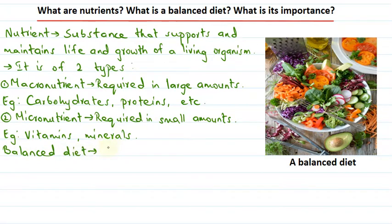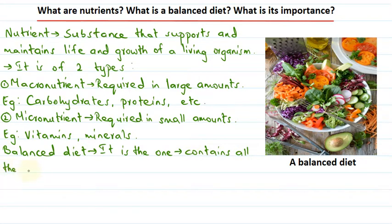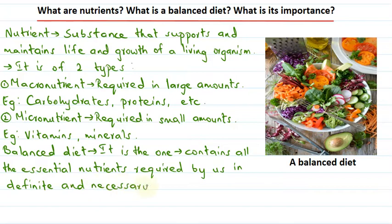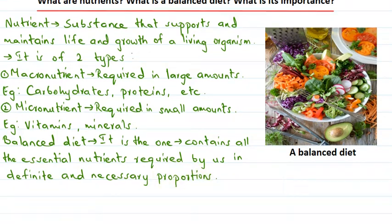A balanced diet is the one which contains all the essential nutrients, and these essential nutrients are required by us in definite as well as necessary proportions. So this kind of diet is called a balanced diet.